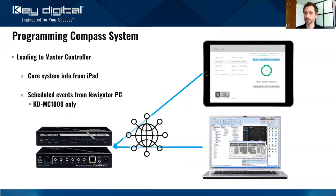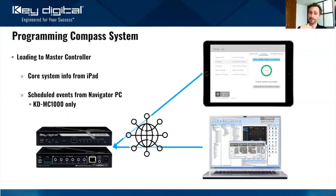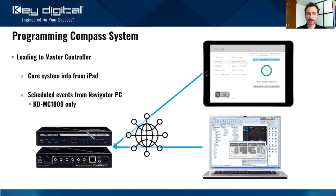As mentioned, the iPad is the brain for Compass Control. When the iPad retrieves the project from the server, it knows everything. When you update master controllers, the iPad syncs that information into the master controller. However, there is one instance where the master controller — the MC1000 specifically — is capable of running events without the iPad: scheduled events. That information goes from the PC into the MC1000 as part of your programming step. We have a tech guide on our tech guides and videos page explaining how to do that.